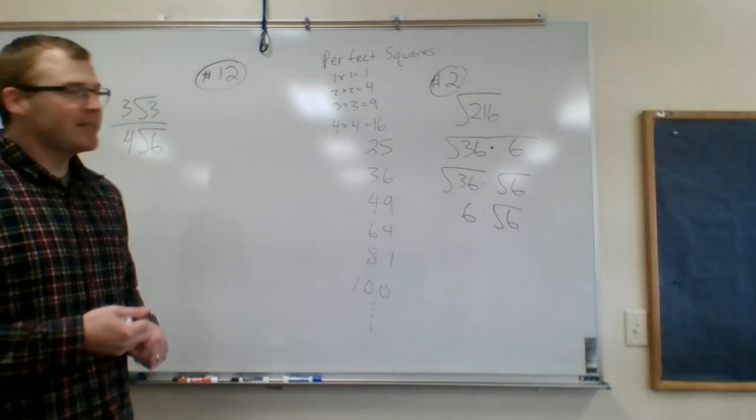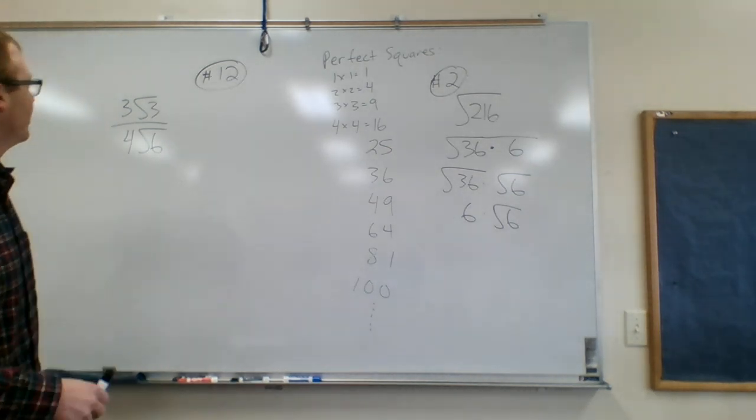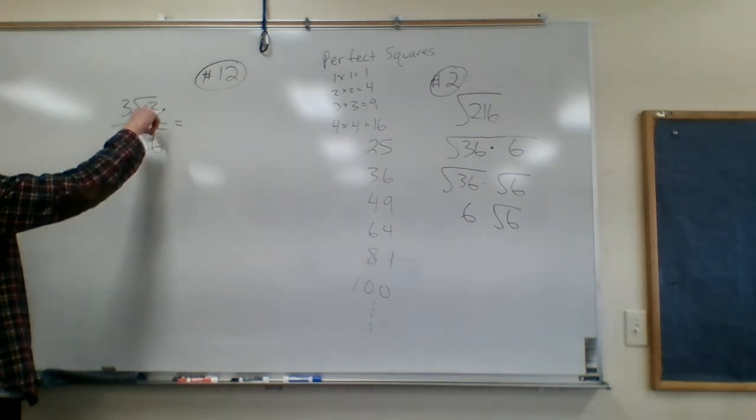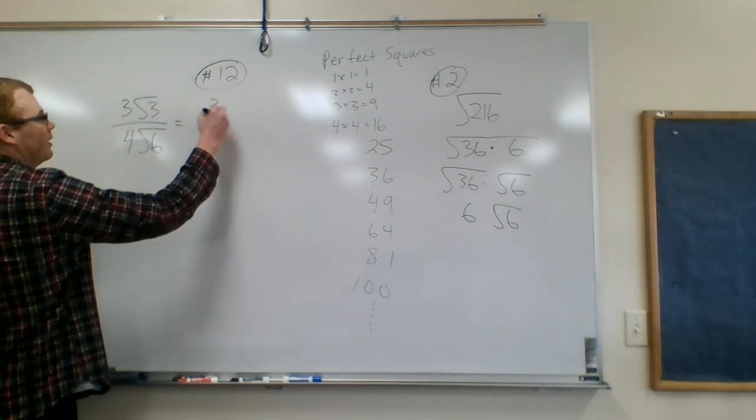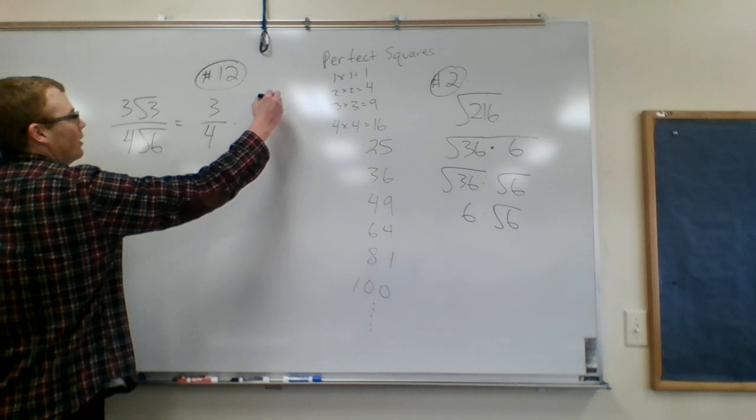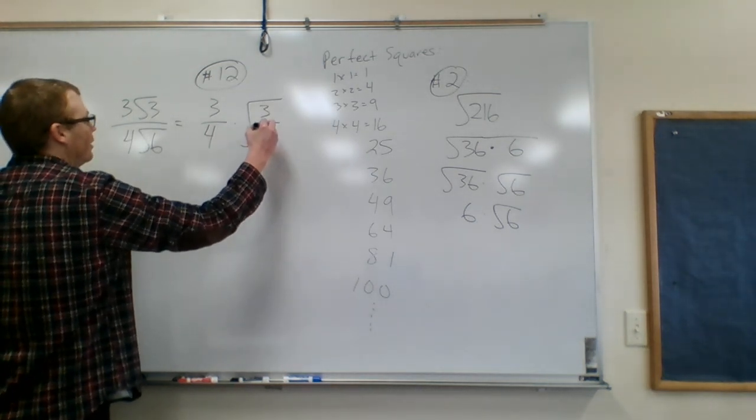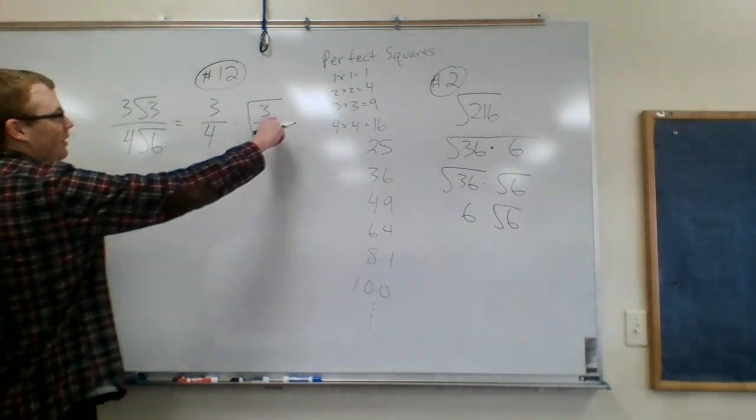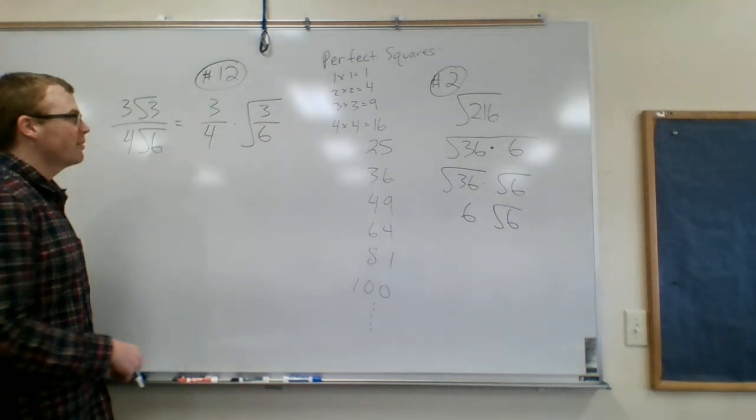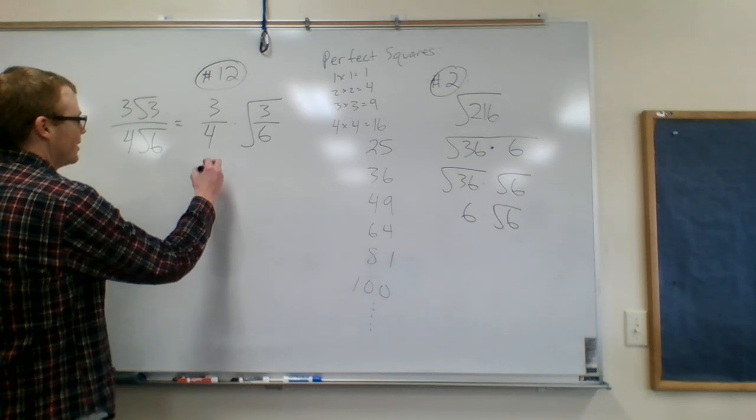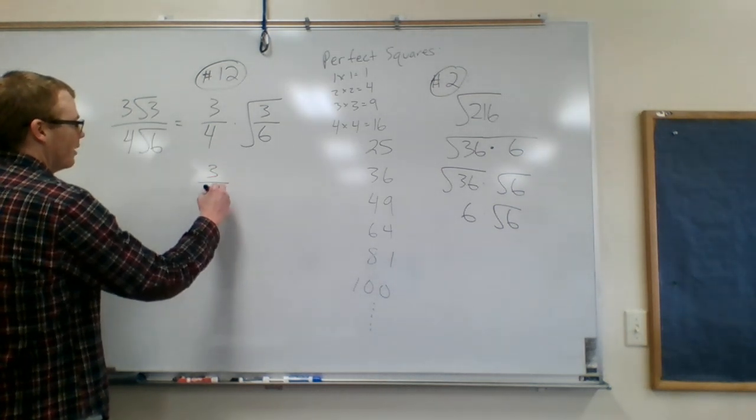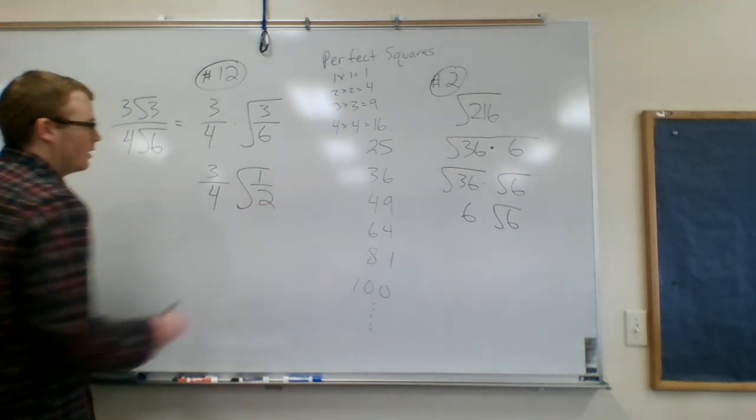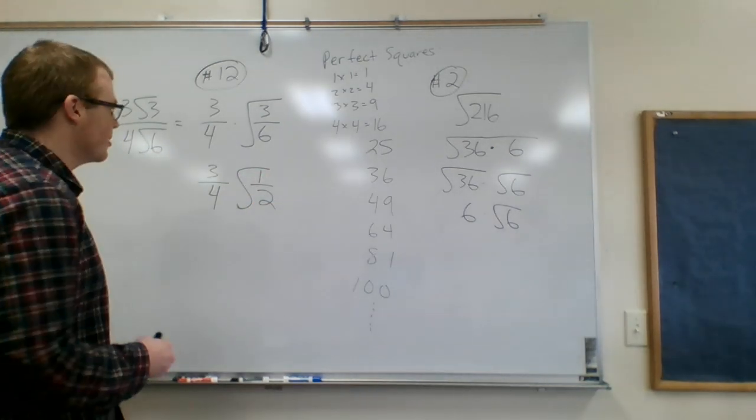There's a couple of different ways to do it. Here's the first way I did it. So you can split these square roots into just one big fraction. So 3 over 6, and then 3 over 6 can simplify to 1 half. So let's do that. So 3 over 4 times. That's just 1 half. Then we have the simplest fraction.